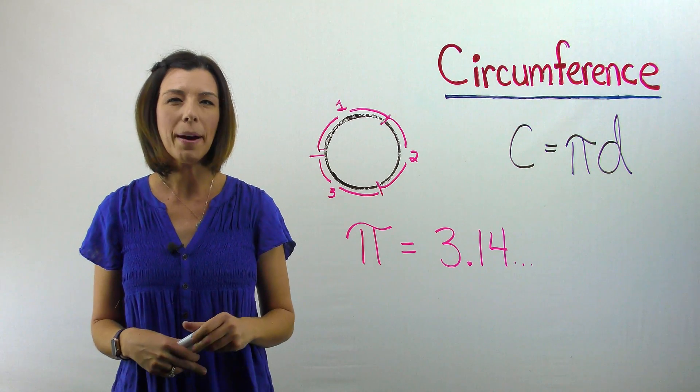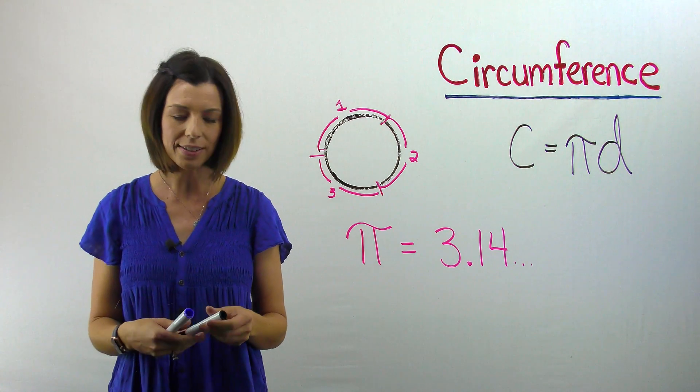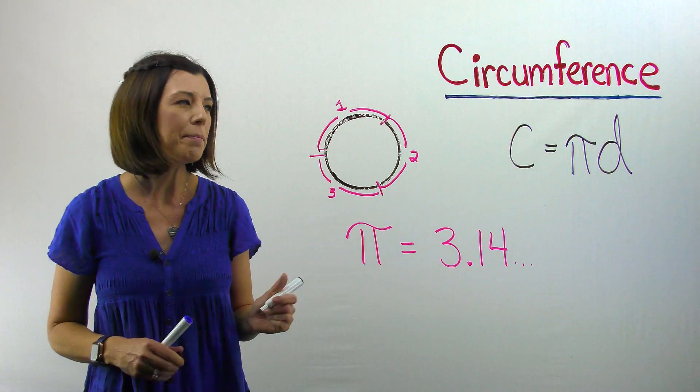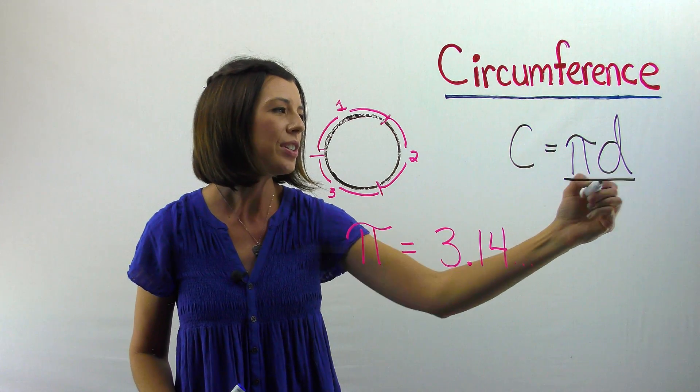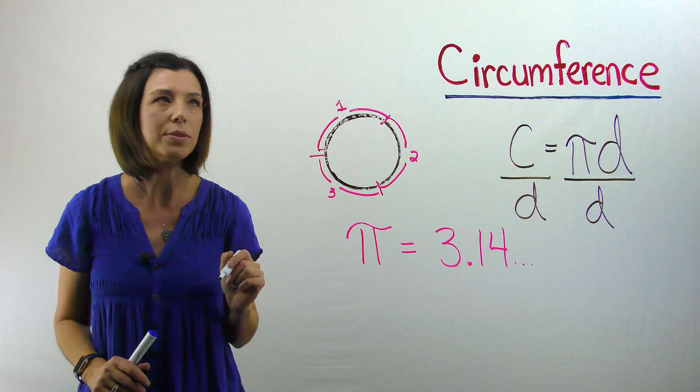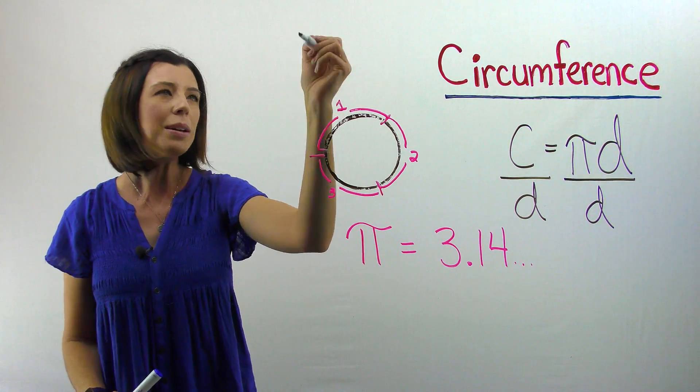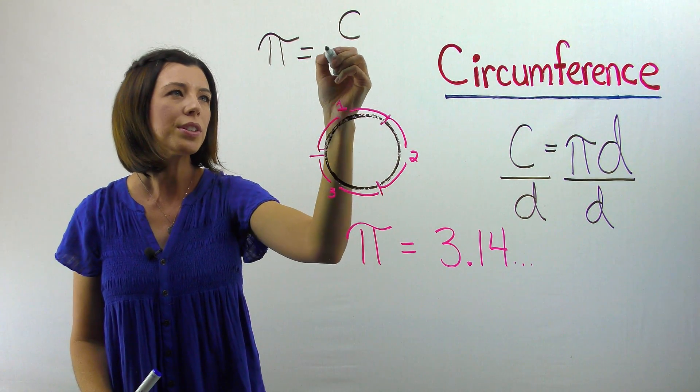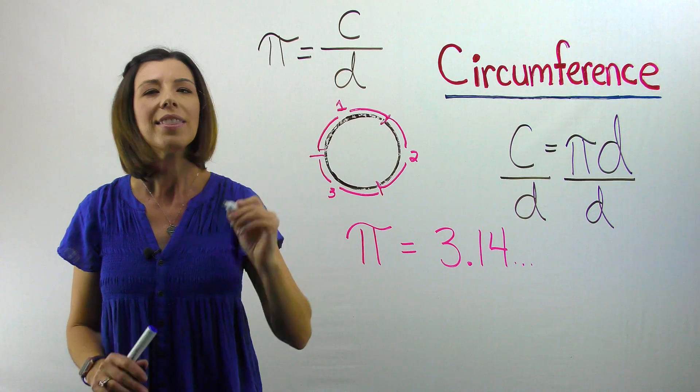What if I wanted to think about what pi actually is? Using a little algebra, I can rearrange my formula, right? If I want to solve for pi, I just need to divide both sides by the diameter. Okay, so let's check this out. So now I'm saying that pi is equivalent to the circumference divided by the diameter.